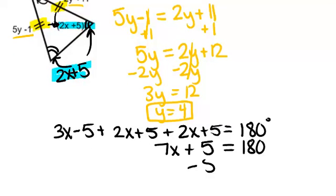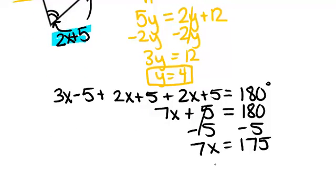Keep going, minus 5 from both sides, and you get 7x equals 175, which means that x equals 25. So now we have our second answer.